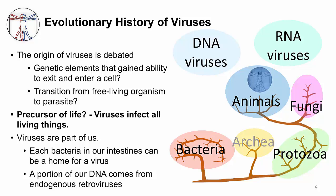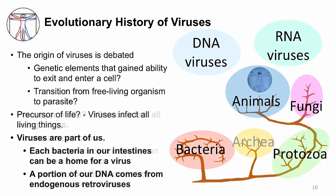If you look at the image on the right, this is a phylogenetic tree showing all living things — bacteria, protozoa, animals, and fungi. Viruses aren't part of the tree because they aren't living things; however, viruses can infect all of these living things. Lastly, viruses are actually part of us — each bacterium in our intestines can be a home for a virus, and in fact a portion of our DNA comes from endogenous retroviruses.